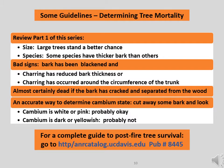Here are some guidelines for determining if a tree that has been exposed to a wildfire might live or die. First, remember that size matters—large trees stand a better chance of tolerating a burn—and species matters, as some species have thicker bark and therefore have more tolerance to wildfire. Look for the bad signs on the tree: bark that has been blackened, charring that has reduced the bark thickness, or charring that has occurred the entire way around the circumference of the trunk. Almost certainly, the tree will not survive if the bark is cracked and separated from the wood. An accurate way to determine cambium state is to cut away some bark and look at it. If the cambium is white or pink, the tree may be okay. If the cambium is dark or yellowish, then probably not.